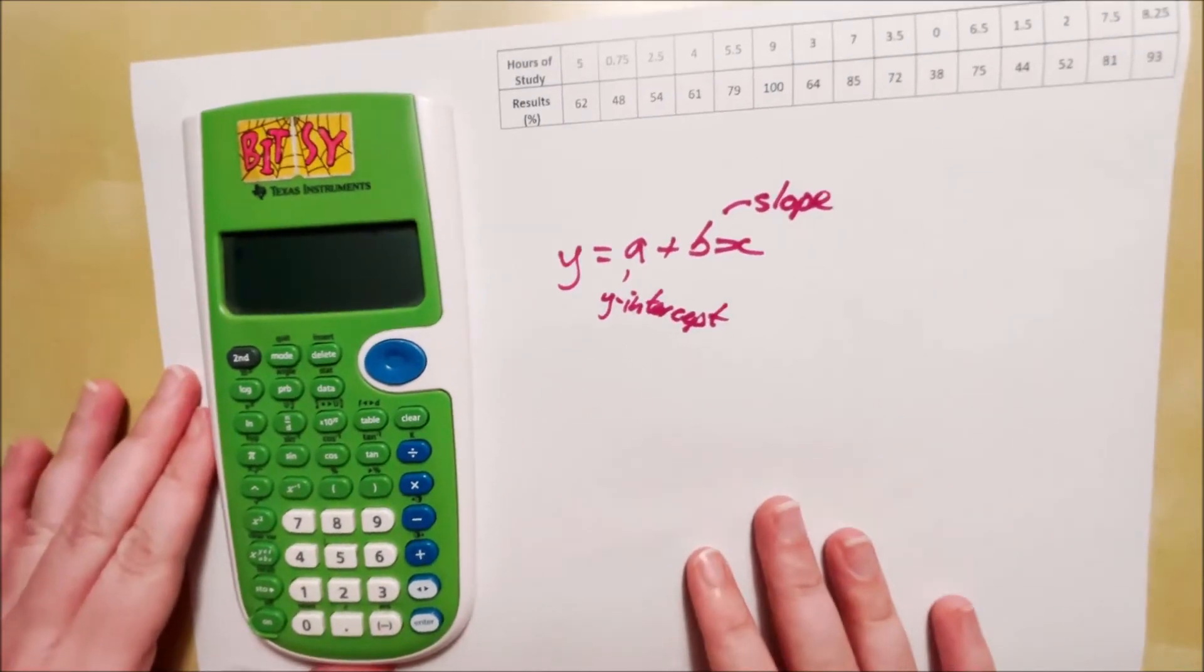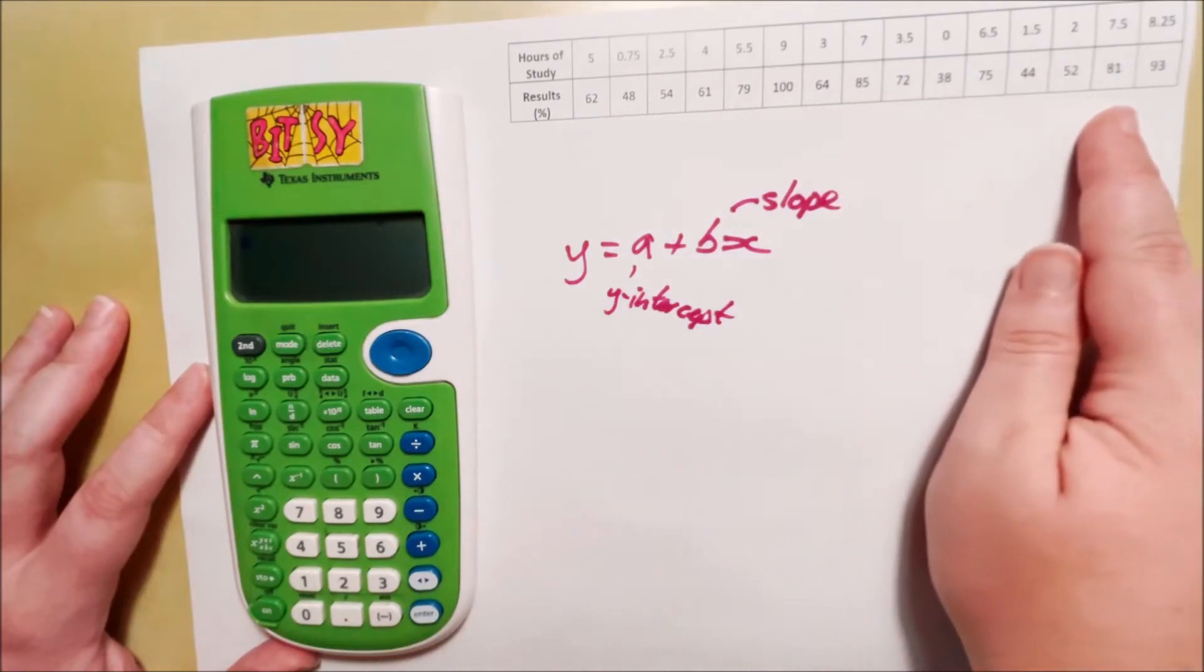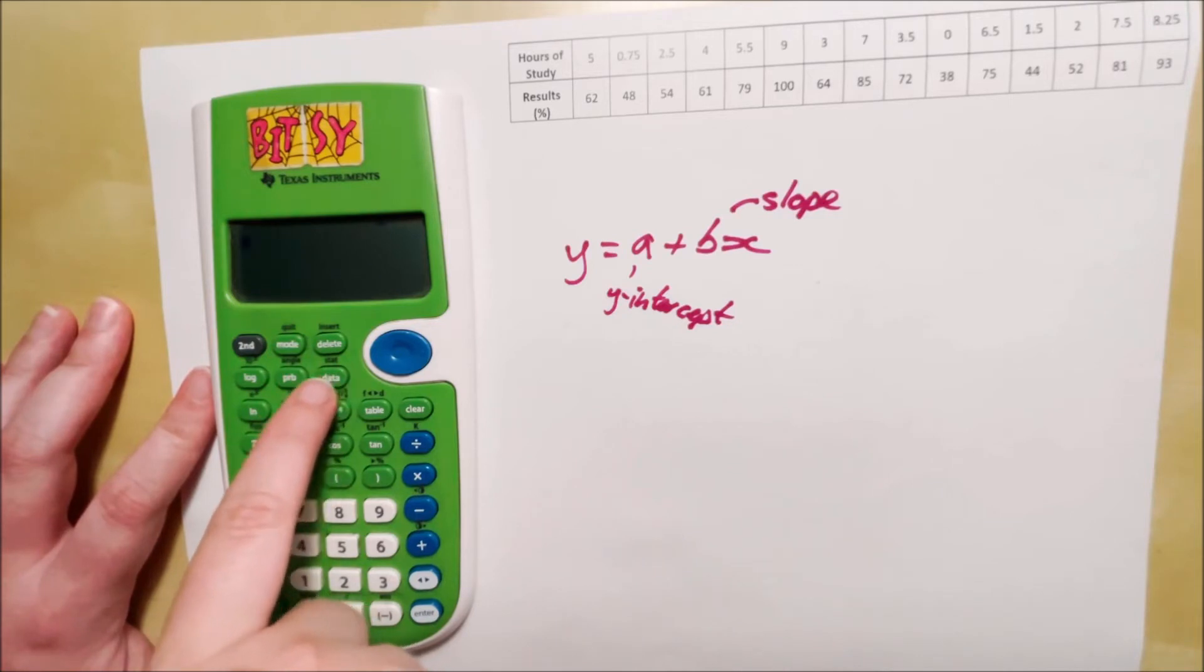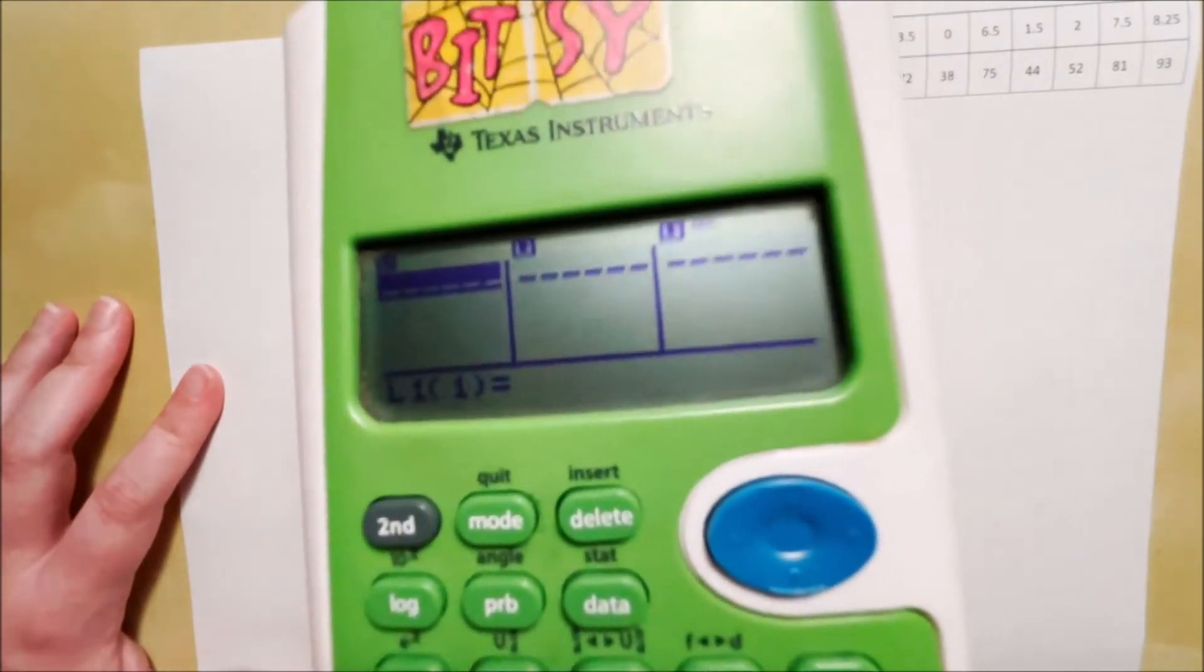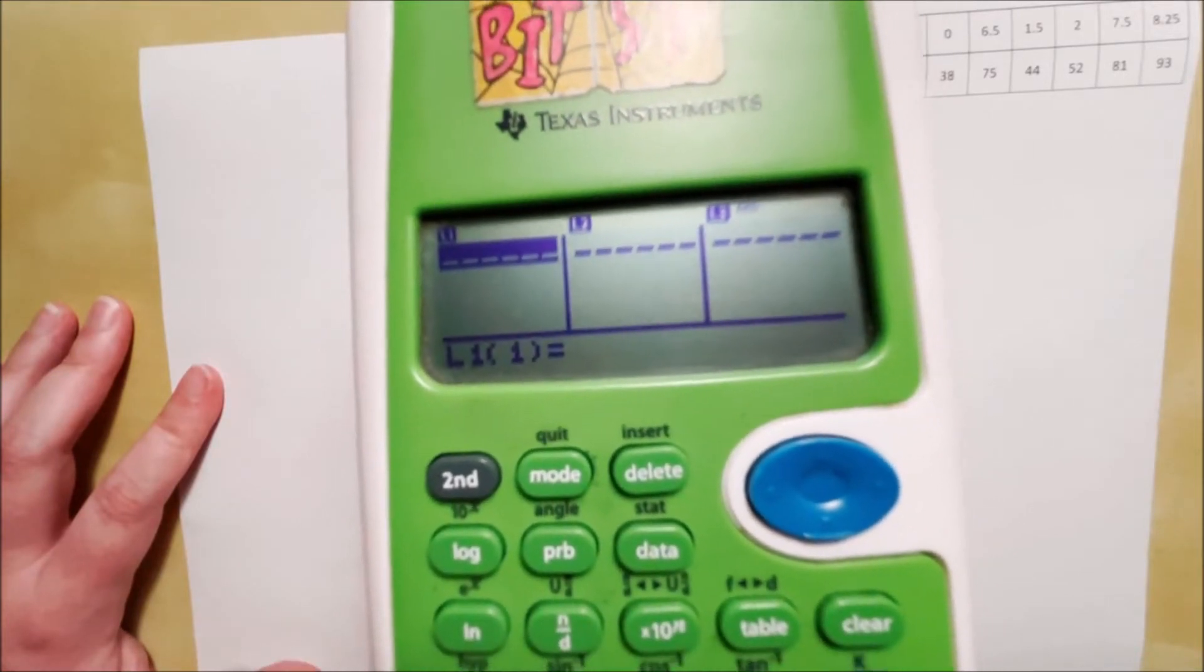Okay, now what we are going to do is enter this data here into our calculators, into its database. So there's a button here that says data, so we're going to press that, and what it will do is bring up a two column table. There we go. So you can see it says L1, L2, L3.